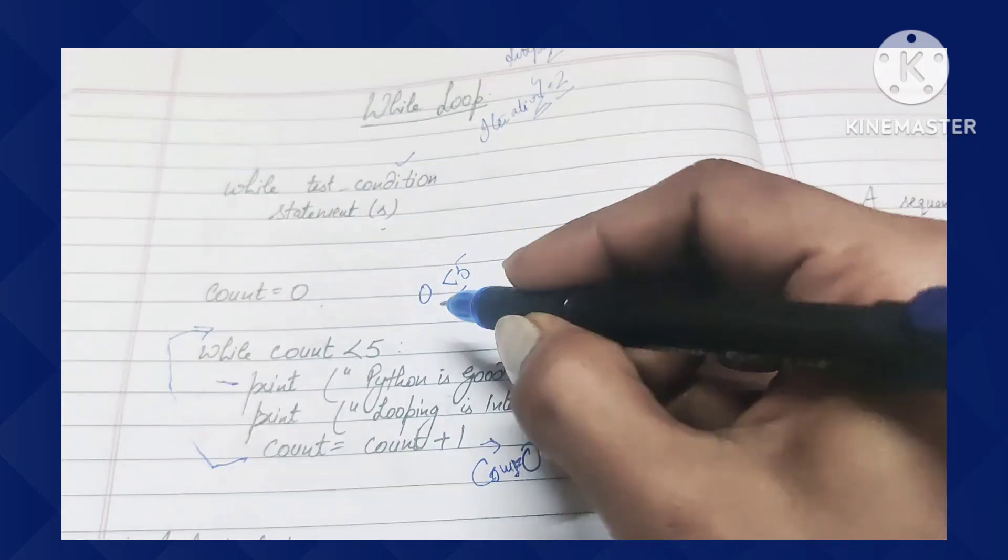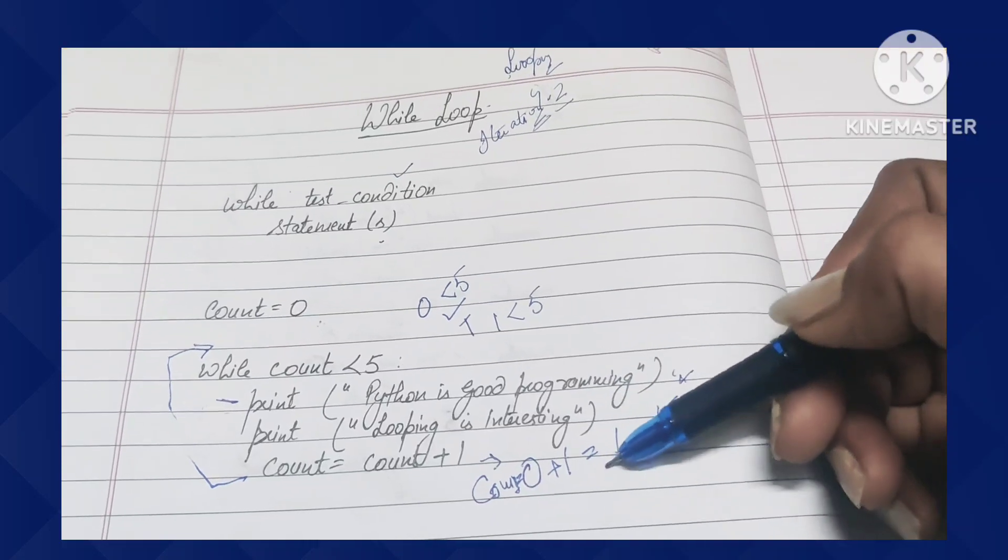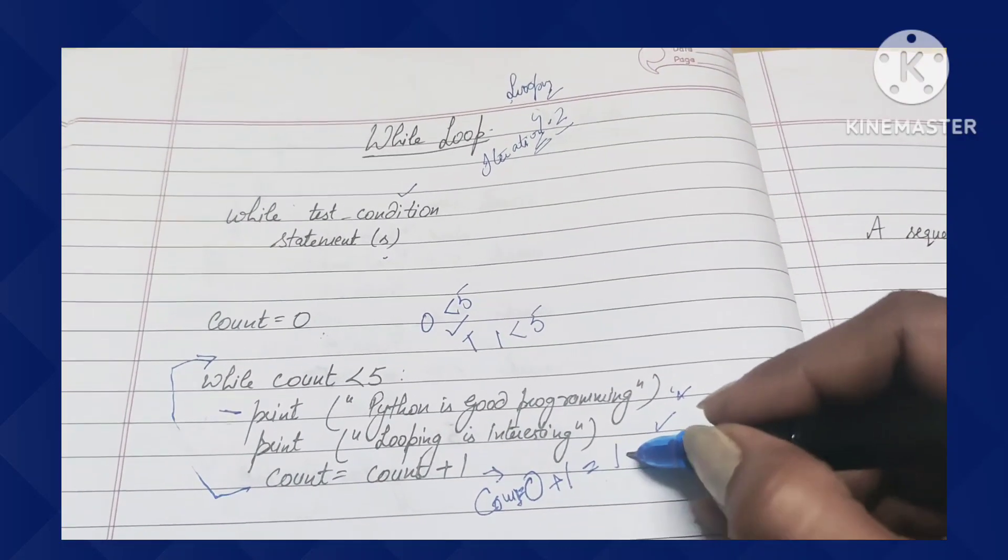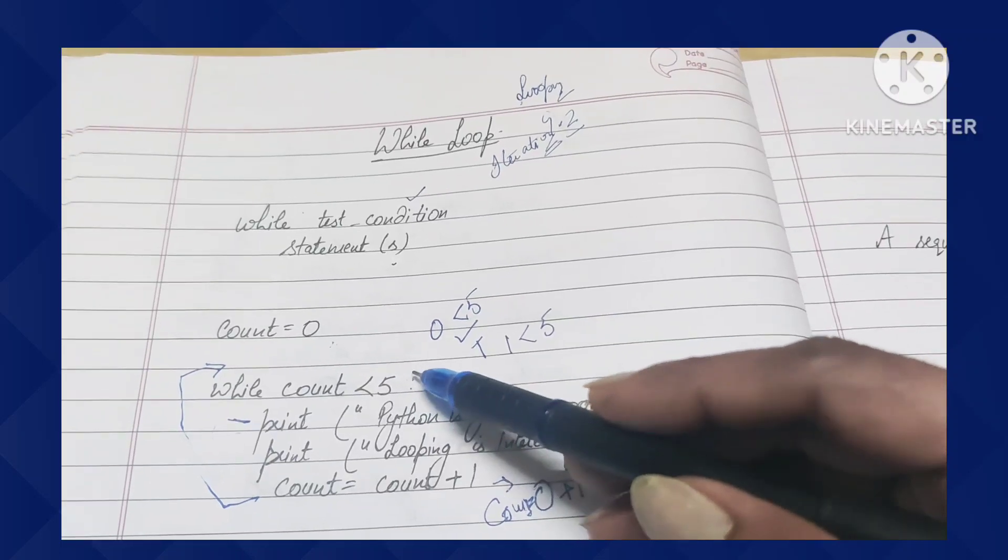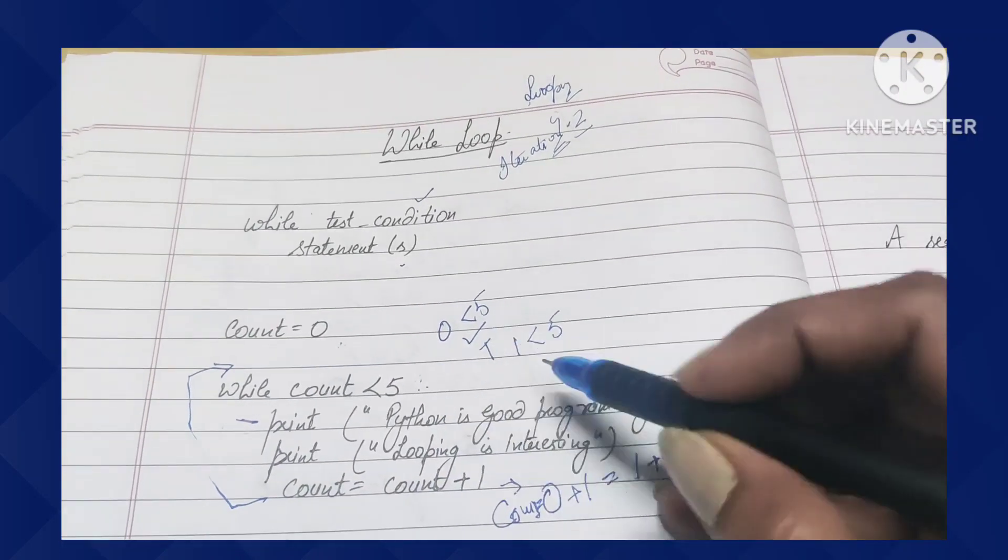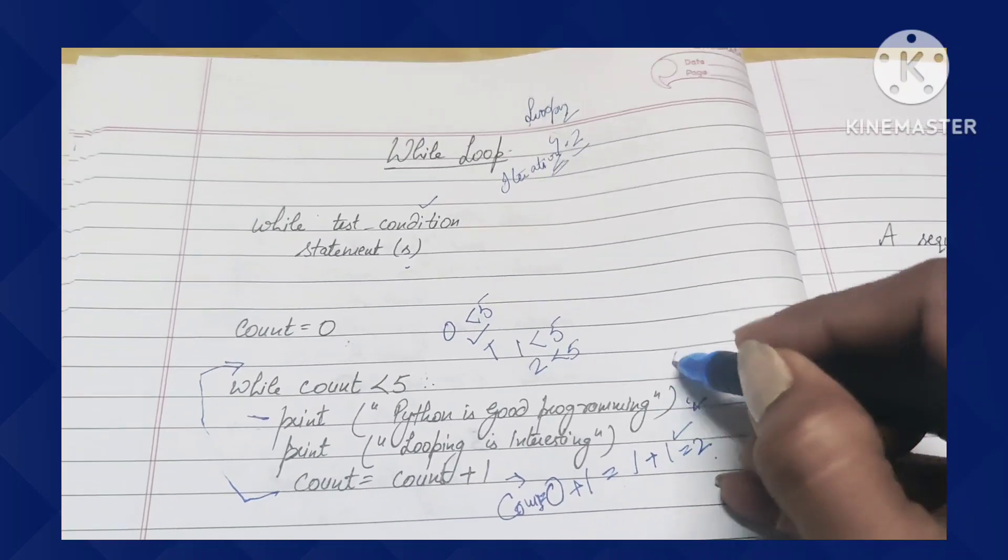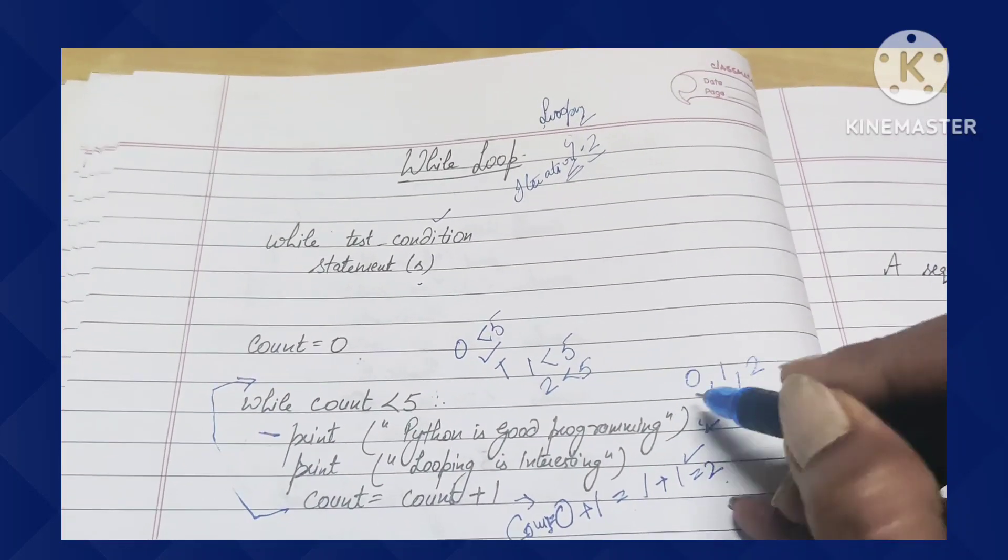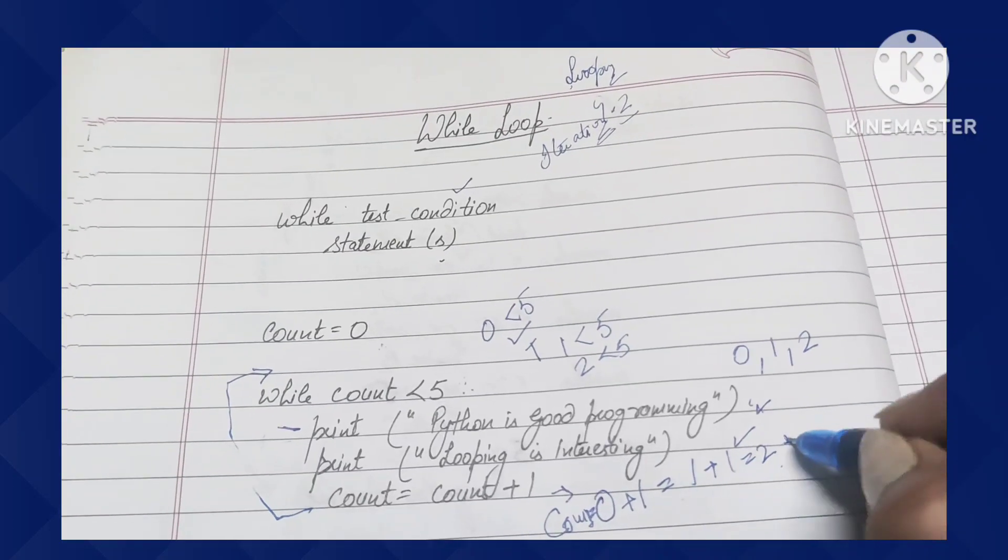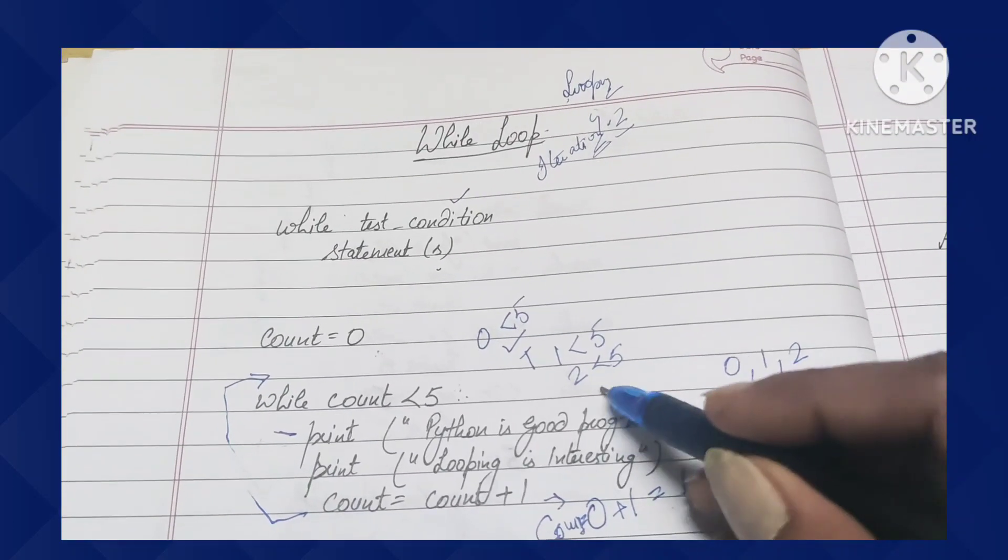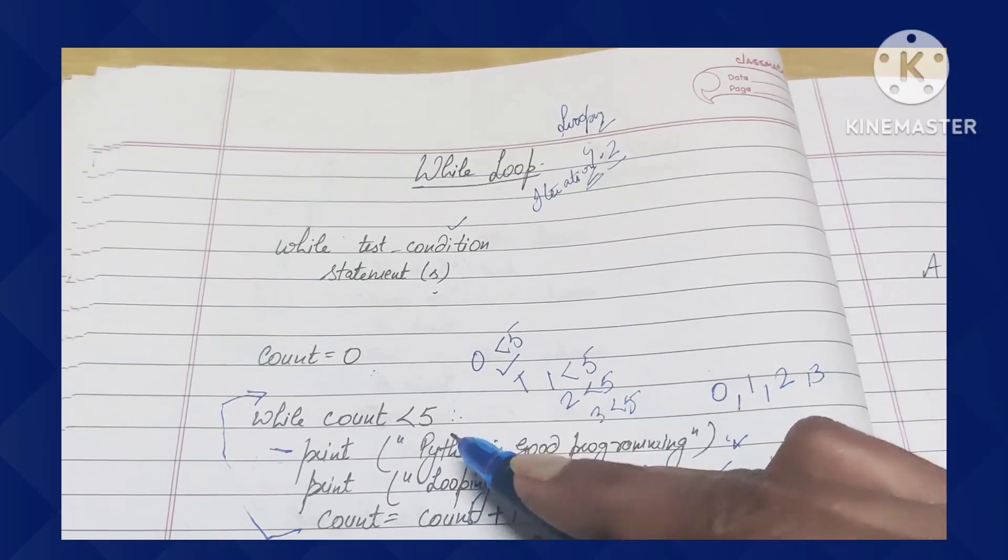Here the value of count is 1, which is less than 5, so condition is again true. These two statements will print again. Now the value of count becomes 2. The value of count is 2, which is less than 5, so condition is true. Again if we go inside, both prints will be printed. The value becomes 3. Three less than five, again condition is true. Then total four times. Four less than five, again condition is true. When it is true, the looping control cannot leave.